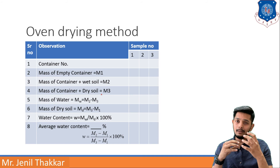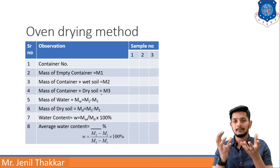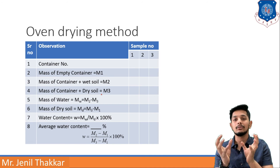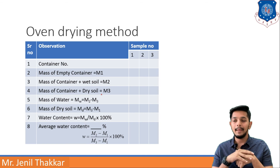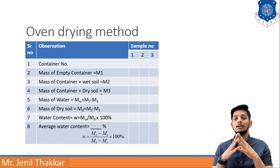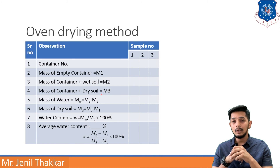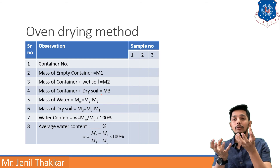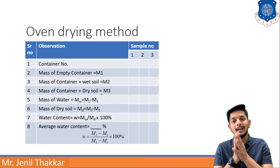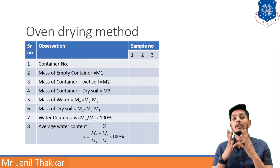Mass of water Mw equals M2 minus M3 — since M2 is container plus wet soil and M3 is container plus dry soil, the difference is water only. Mass of dry soil Ms equals M3 minus M1 — since M3 is container plus dry soil and M1 is the empty container, the remainder is dry soil. Water content formula: W equals Mw divided by Ms, multiplied by 100, expressed as a percentage.